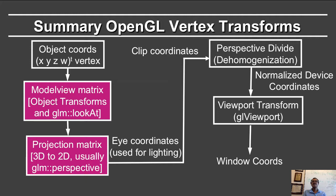After this, you can do the perspective division or de-homogenization, whereupon you get what is known as normalized device coordinates, which are then moved on to the pixels in the screen by using the viewport transformation, and finally appear on your window.